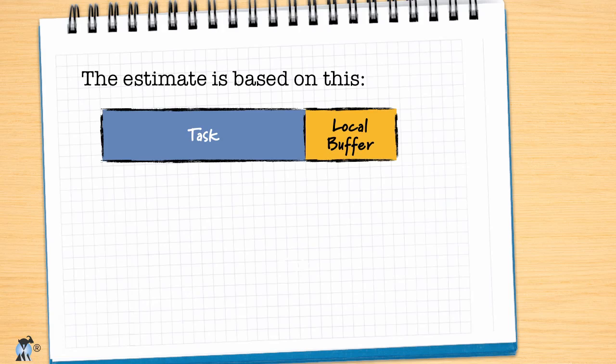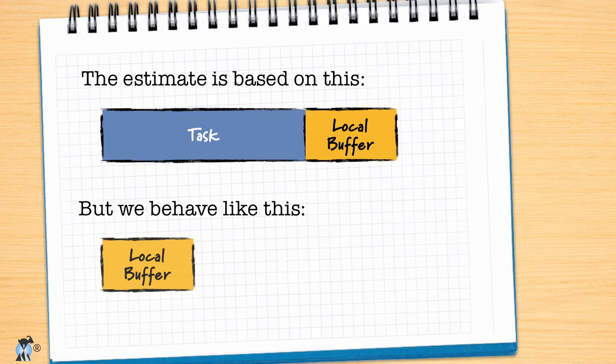Suppose that a month later it's now time for me to work on that task. I look at it and think 10 days, no way, that shouldn't take more than seven. And I let the first three days go by before I start. I use up that local buffer right at the start.